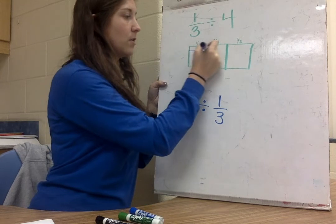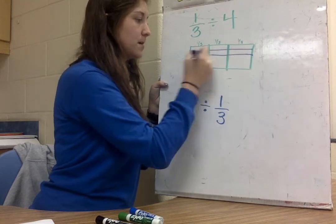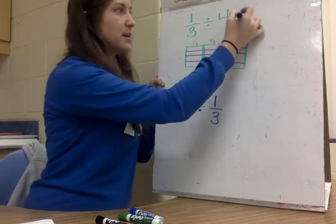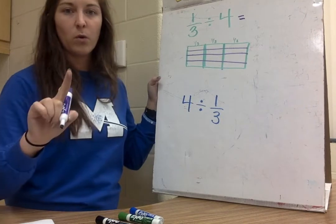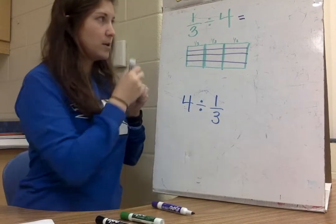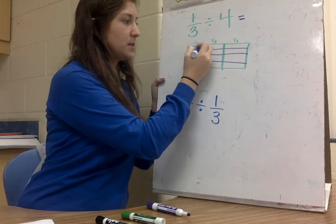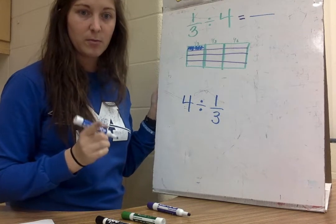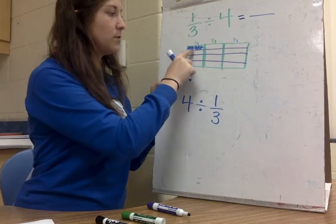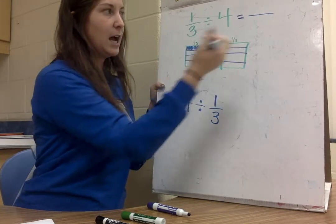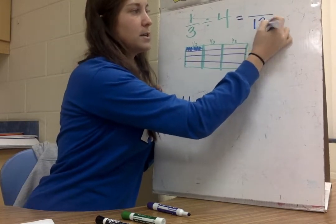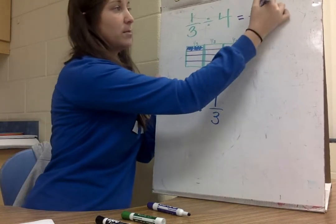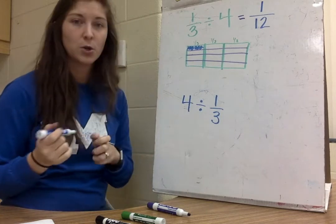I'm going to cut straight across here. To find my answer, I need to know what one of these pieces represents, so I'll shade in one piece. To find my denominator, I count the total number of pieces inside the rectangle — I count 12 pieces, so 12 is my denominator. Then I count how many are shaded — just 1. So my answer to this problem is 1/12.